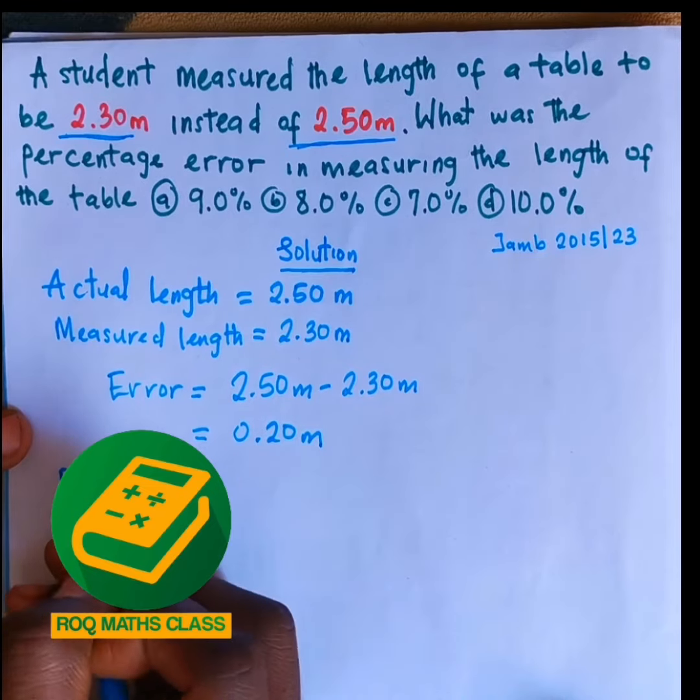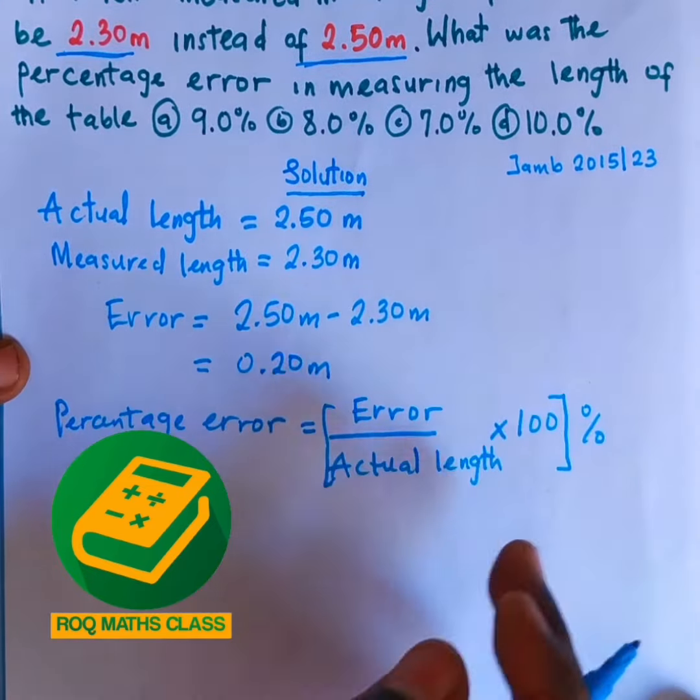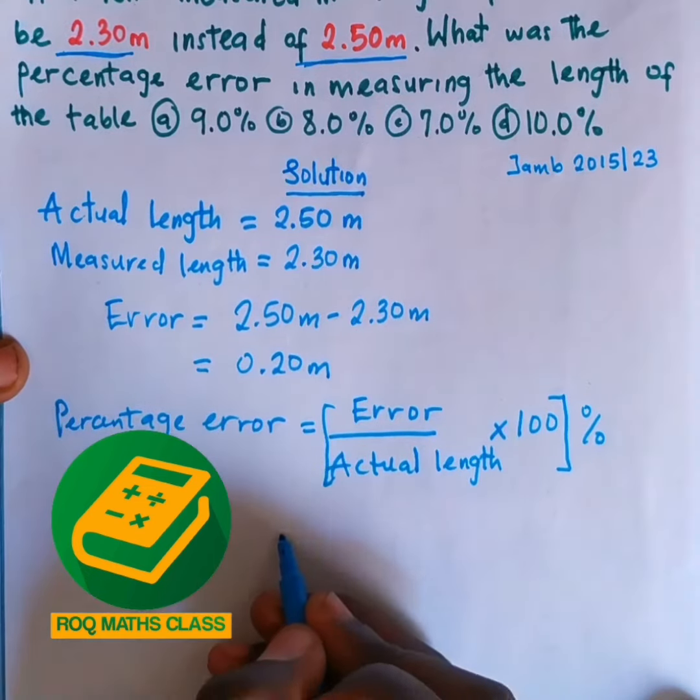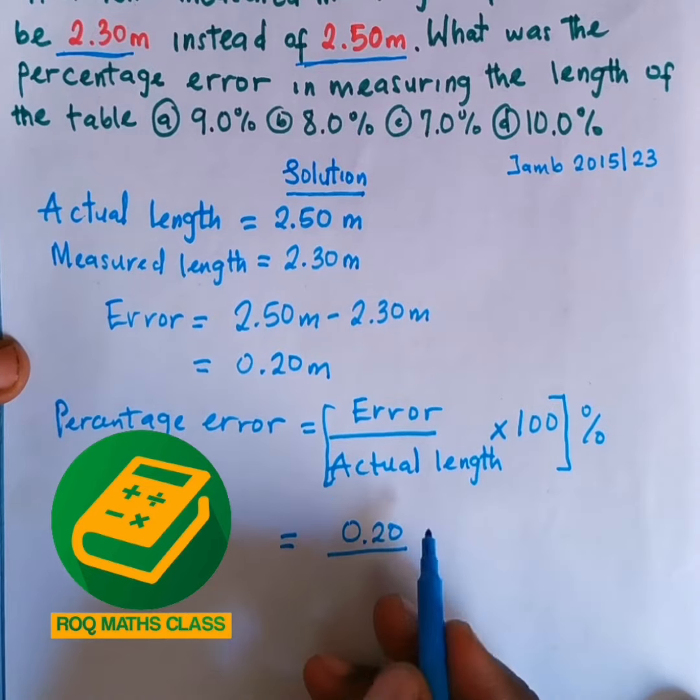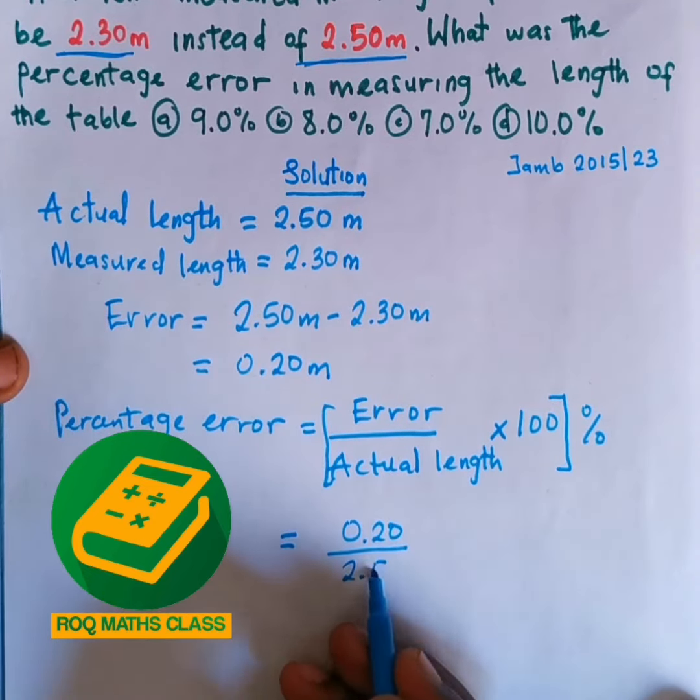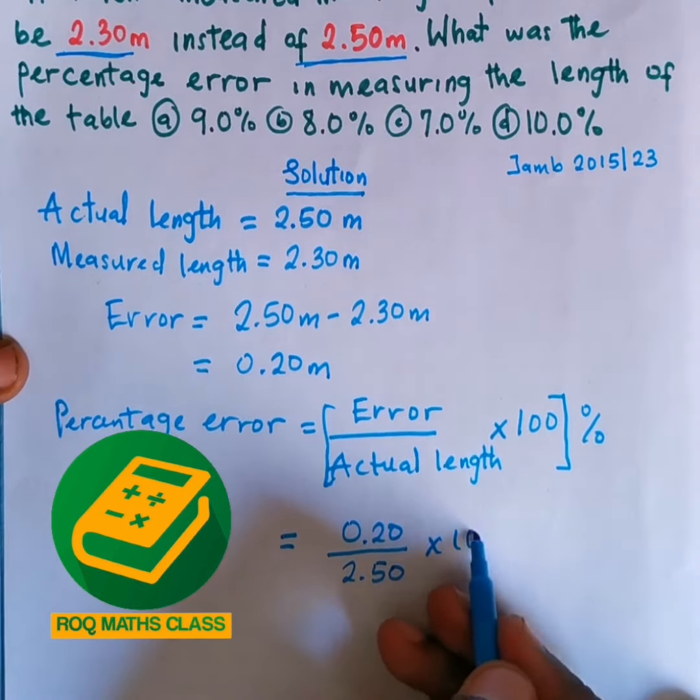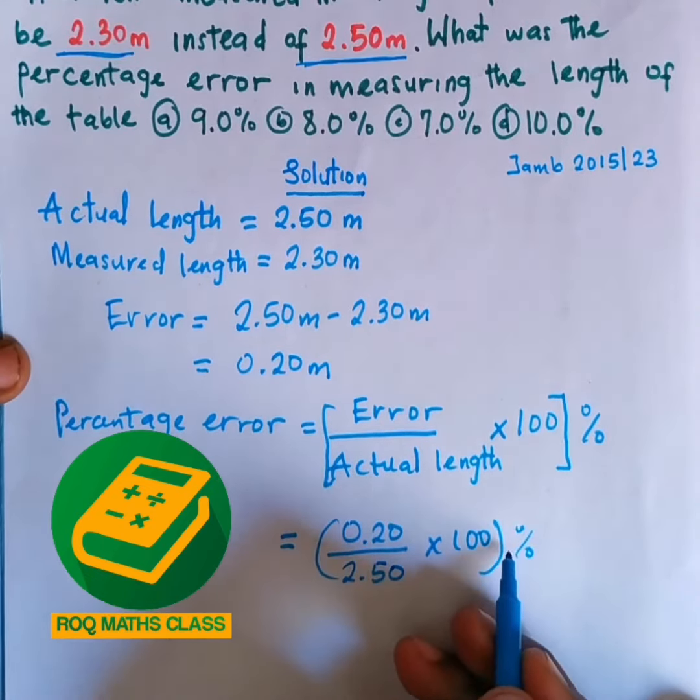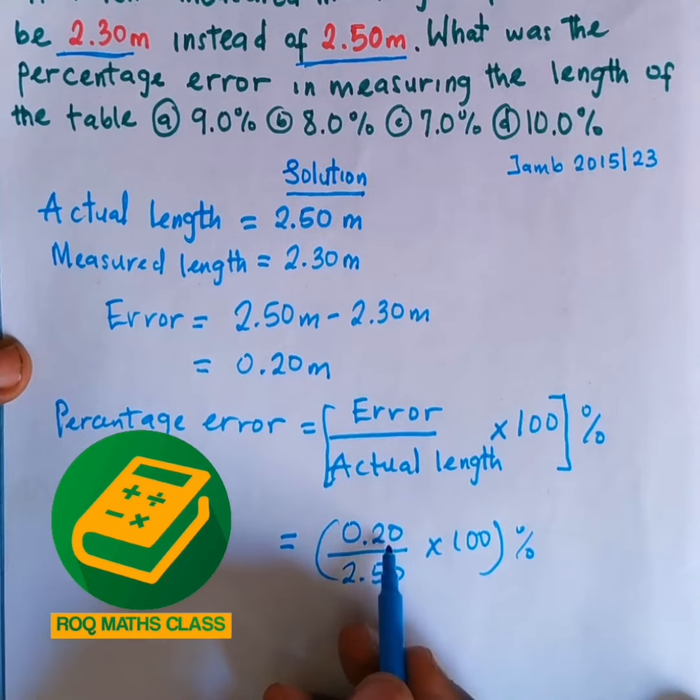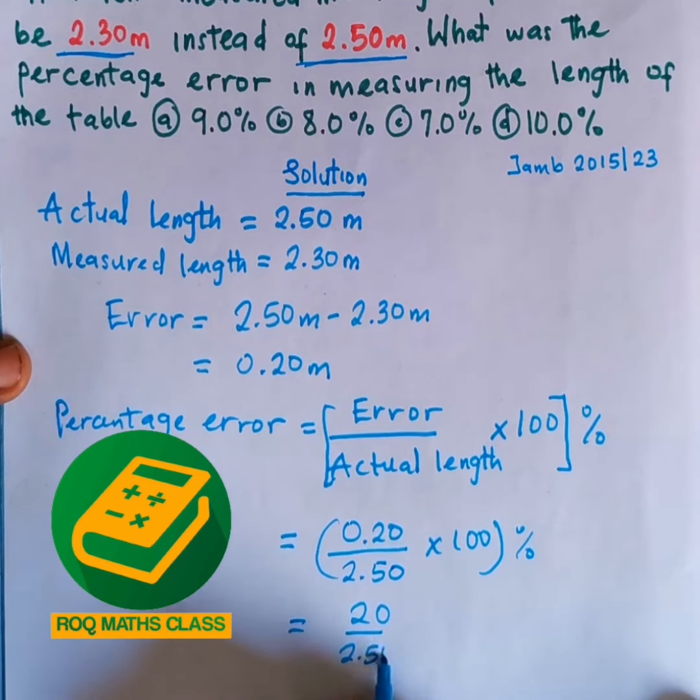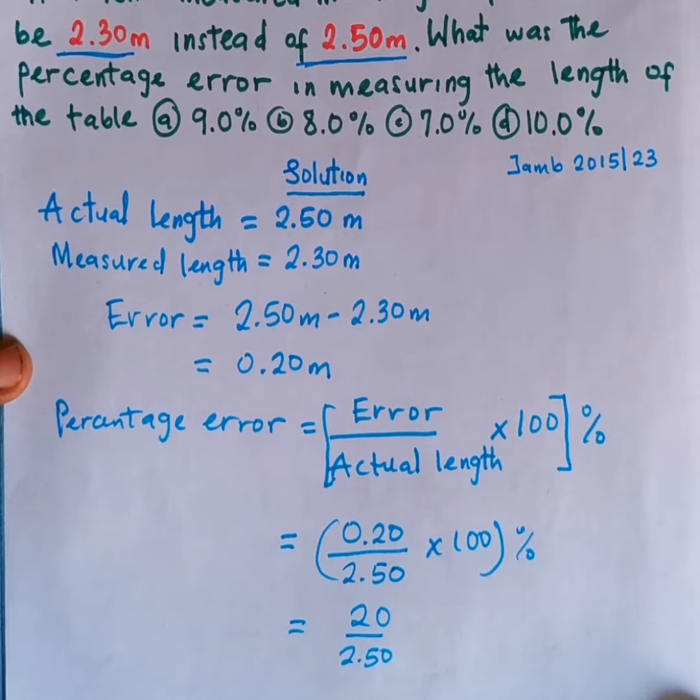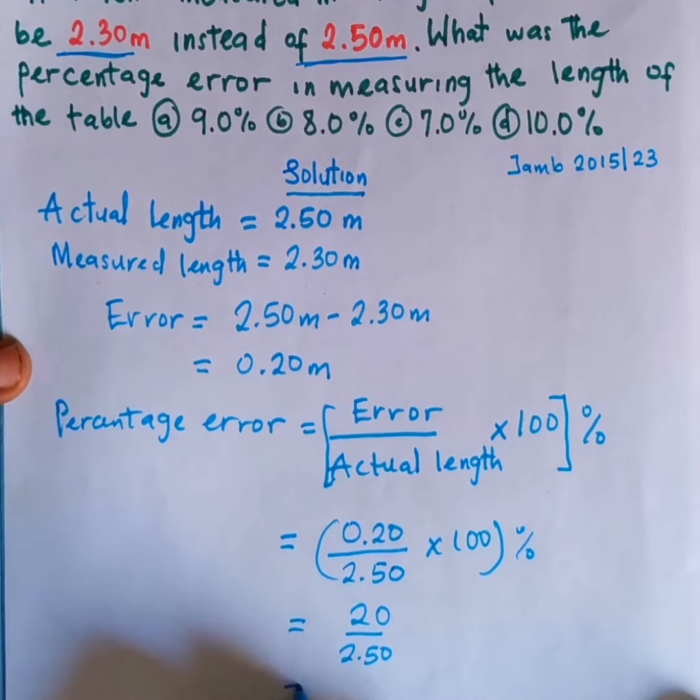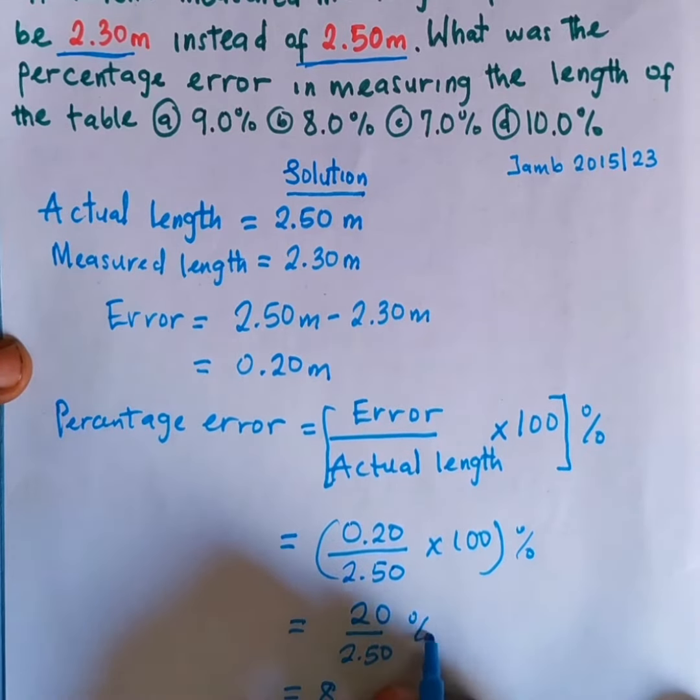Then the percentage error formula is: Error divided by actual length times 100. The error made is 0.20 over the actual length of 2.50 times 100%. So 0.20 times 100 is 20. 20 divided by 2.50. What's going to be the answer? The answer is equal to 8%.